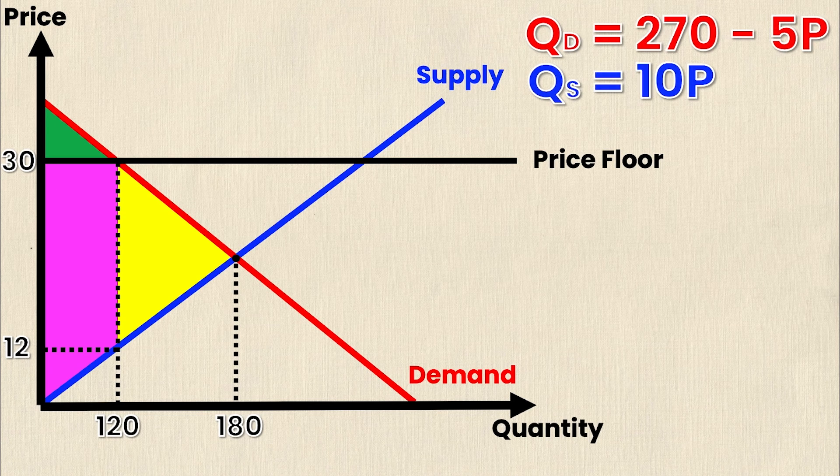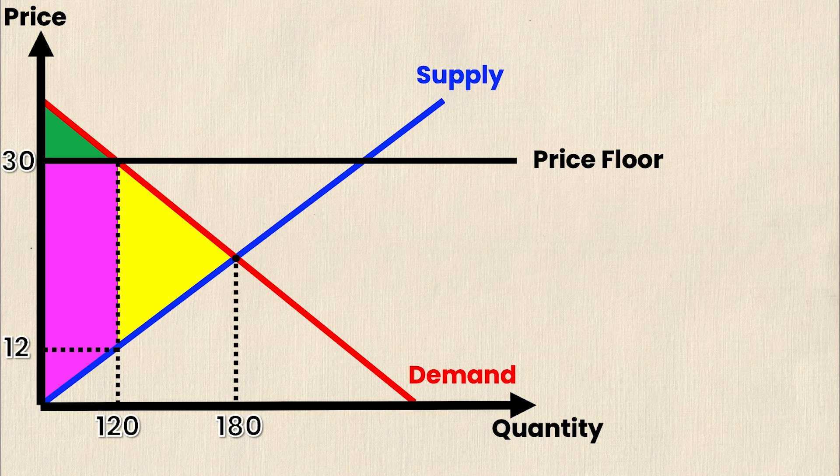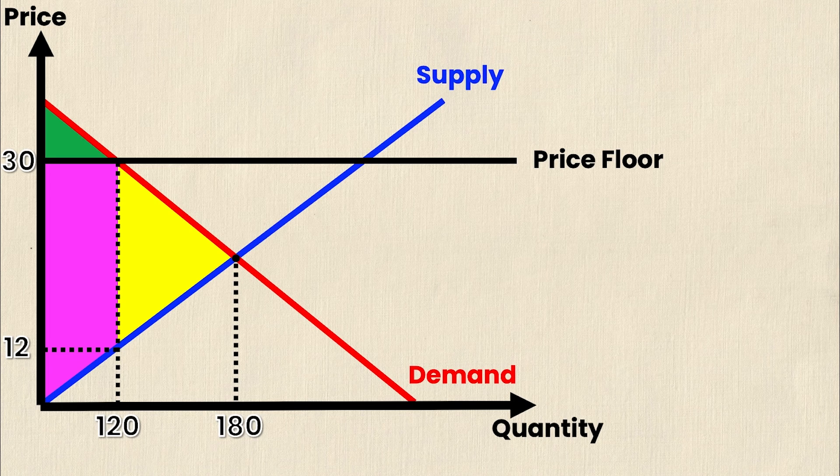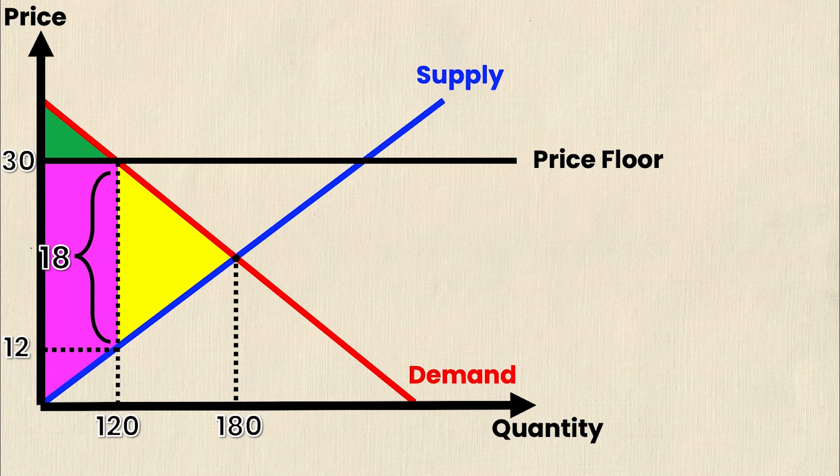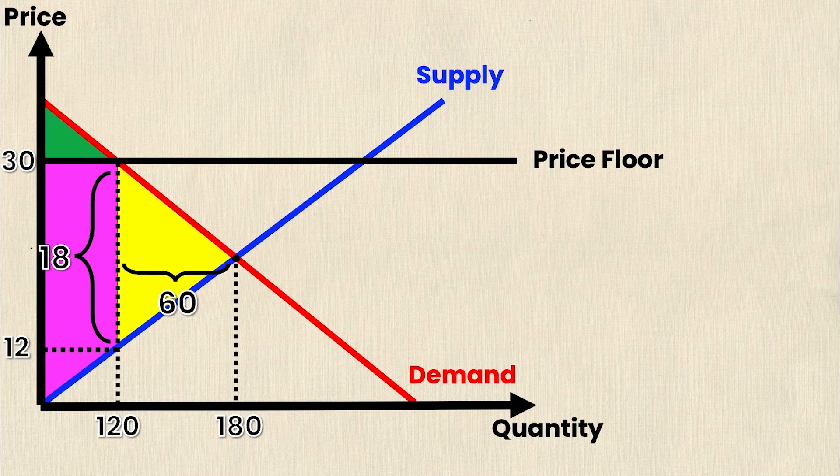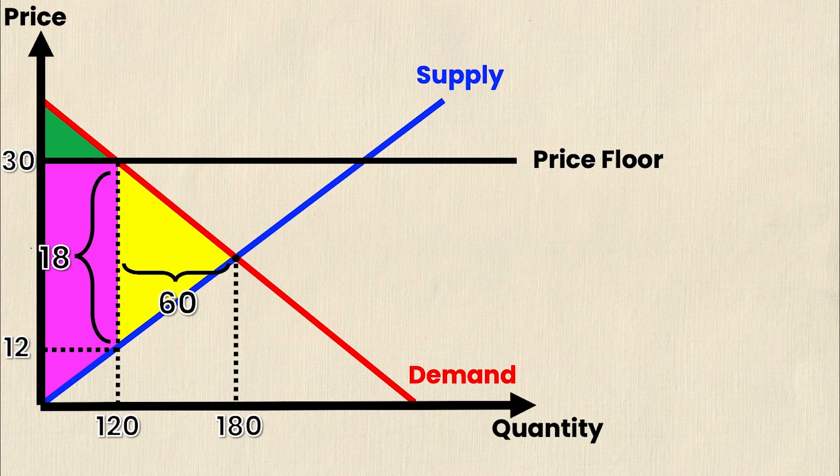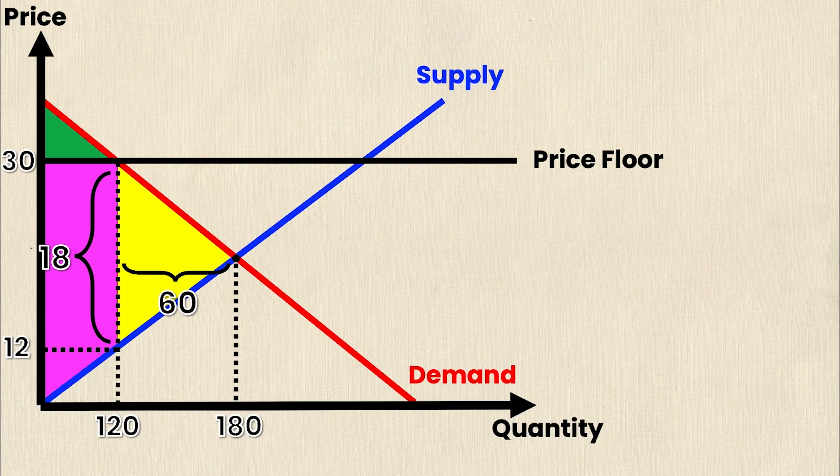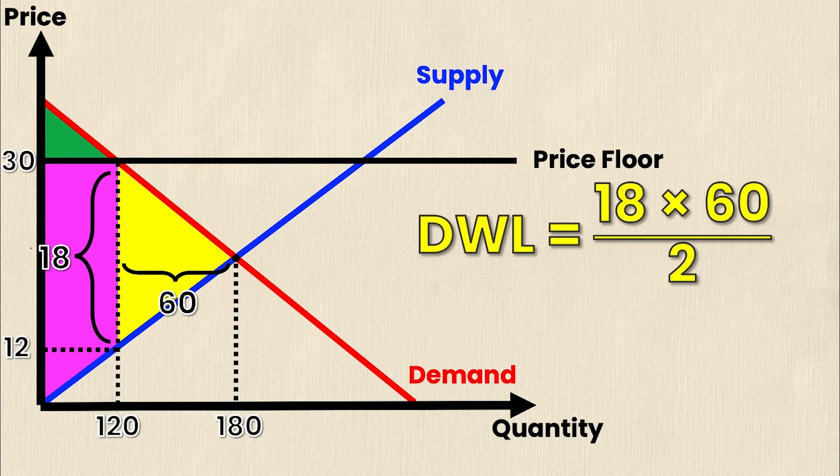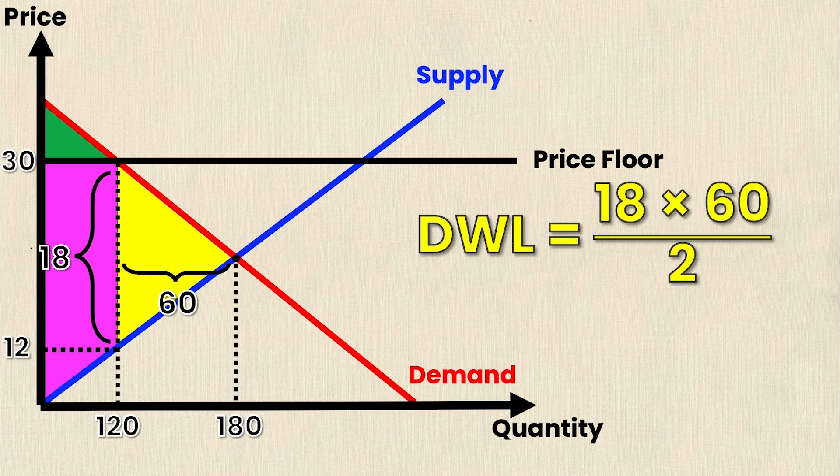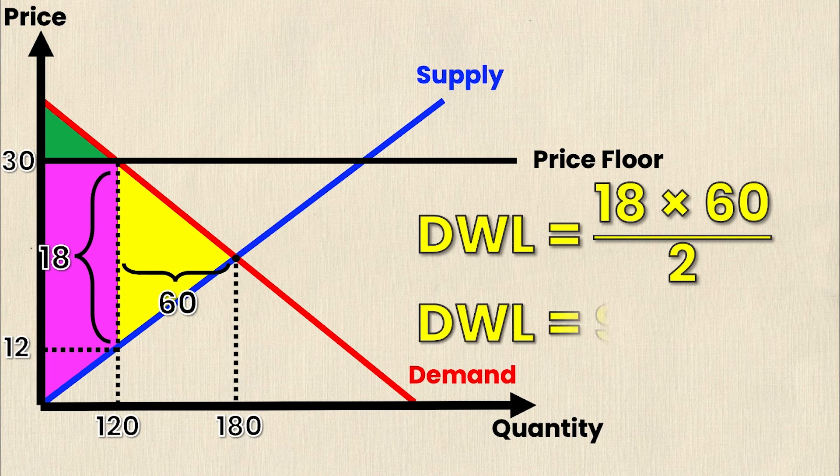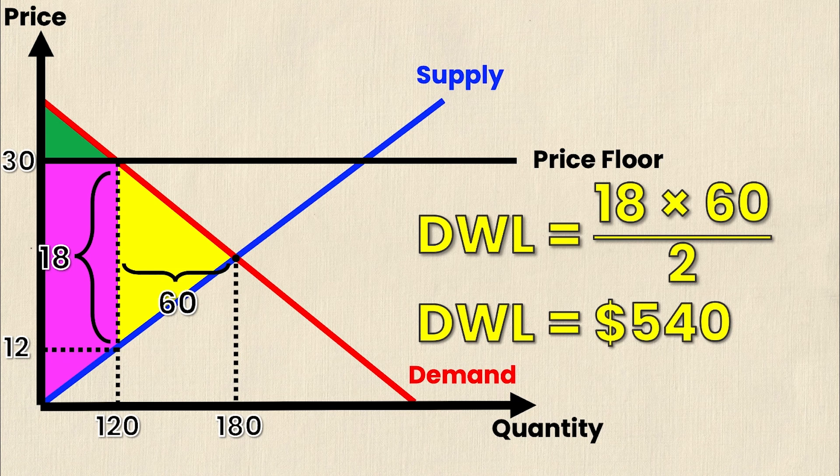I no longer need the supply and demand equations so I'm going to get rid of them. Recall that the area of a triangle is simply base times height divided by 2. In this case the base is the difference between 30 and 12 which is 18, and the height of this triangle is the difference between 180 and 120 which is 60. The yellow triangle represents deadweight loss, so then we can say that deadweight loss equals base times height divided by 2, which is 18 times 60 divided by 2.